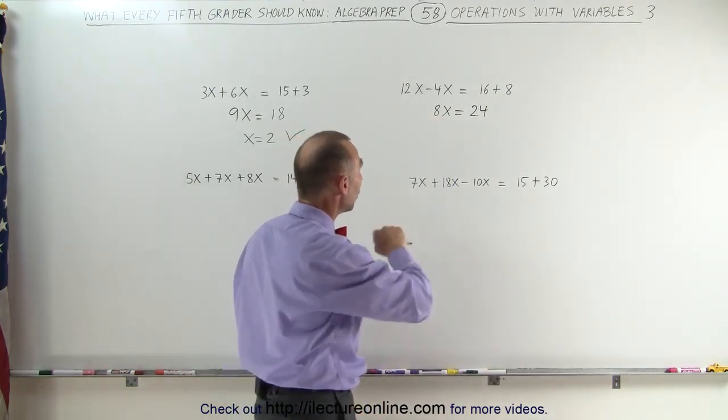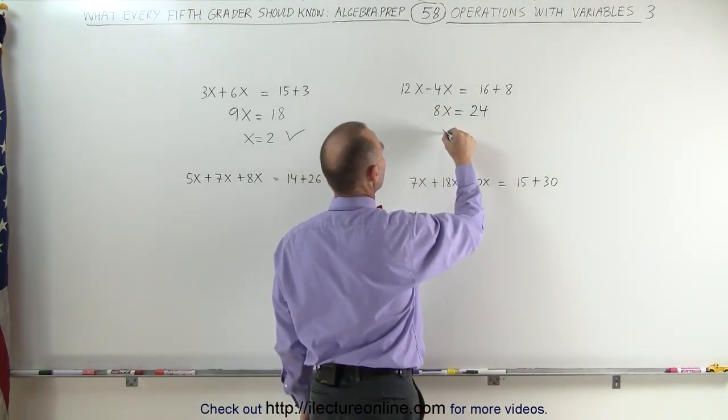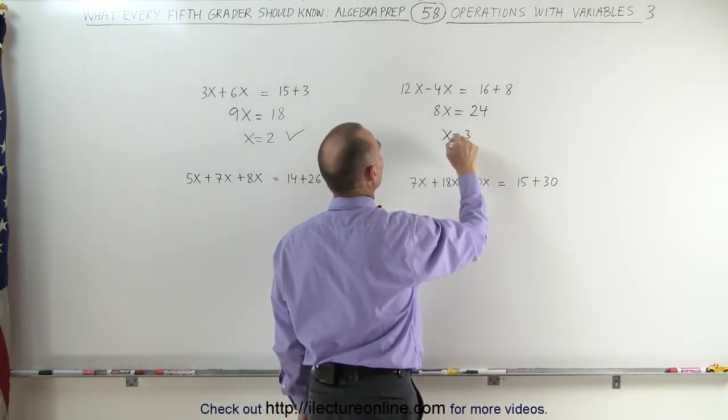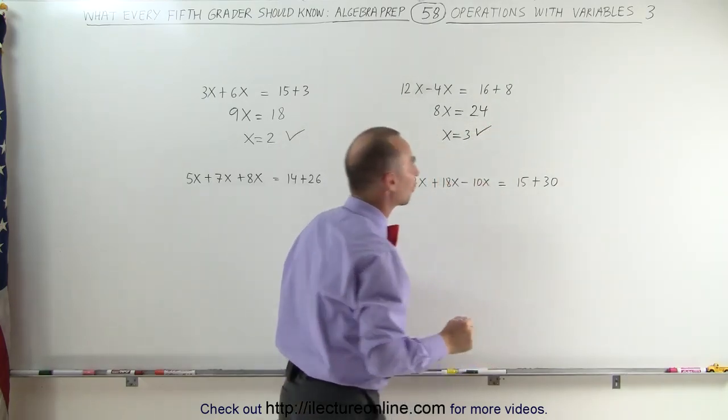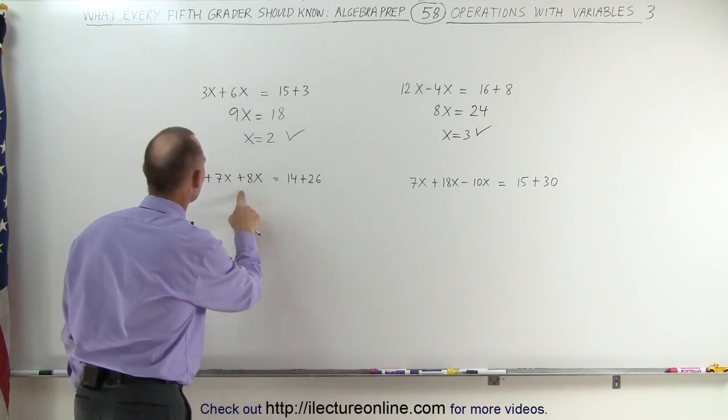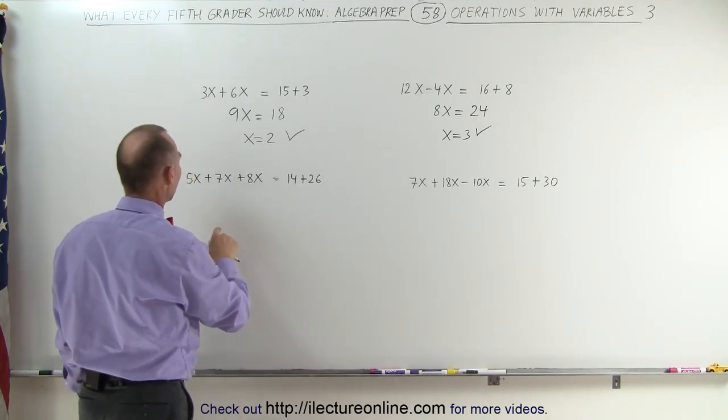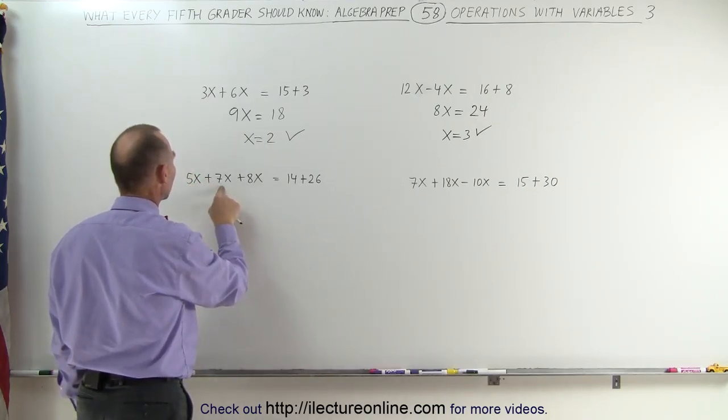Now we have to ask ourselves the question, 8 times what unknown number gives me 24? Well, I know that 8 times 2 is 16, but 8 times 3 is 24, which means the unknown number must equal 3. x equals 3, because 8 times 3 gives me 24, and that's therefore the correct answer.